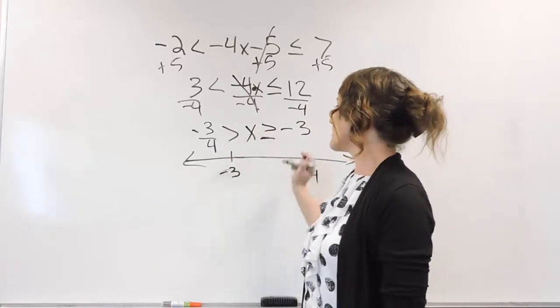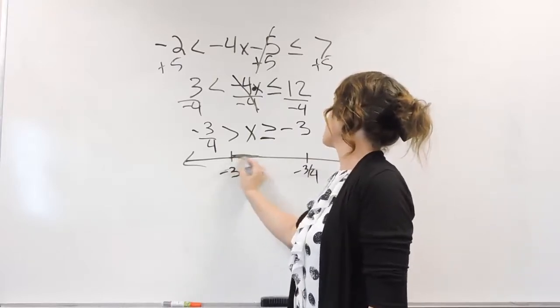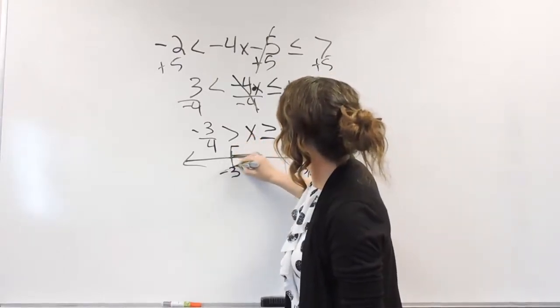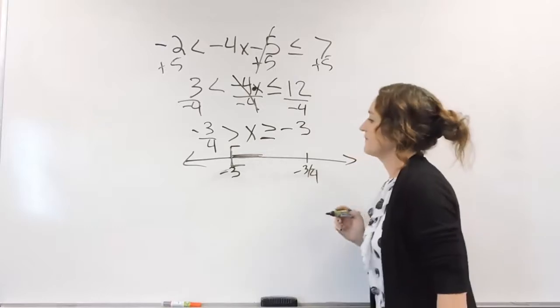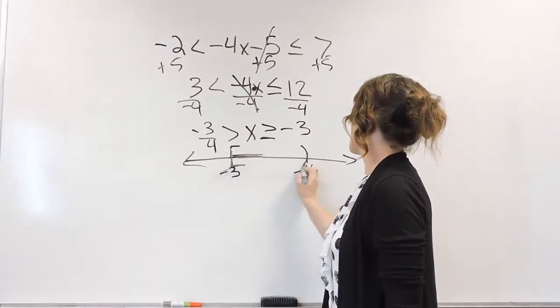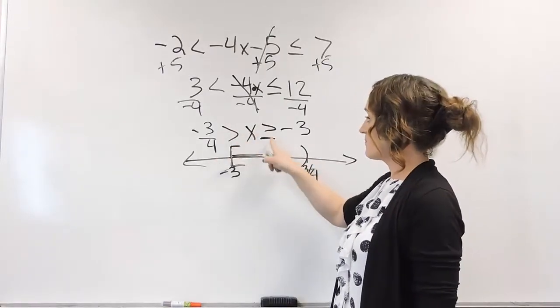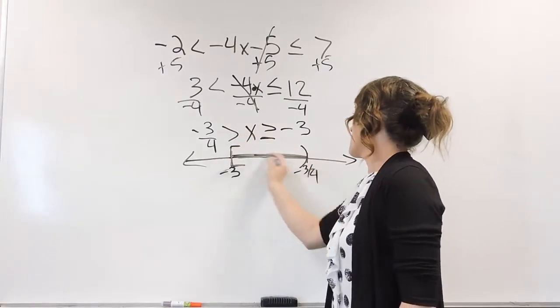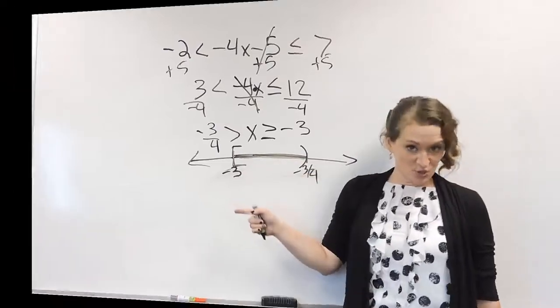And let's see, x is greater than or equal to negative 3. So it's greater than that way. That's a bracket on negative 3. And x is less than the negative 3 fourths. So that's a parenthesis on negative 3 fourths, brackets on the negative 3. Otherwise, we are shading in between them.